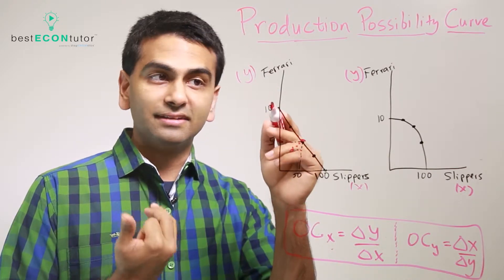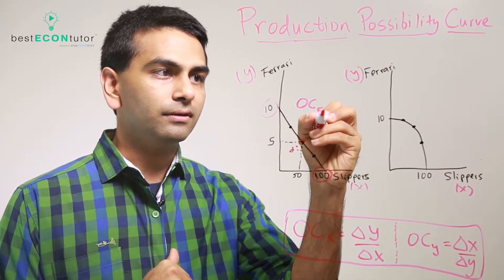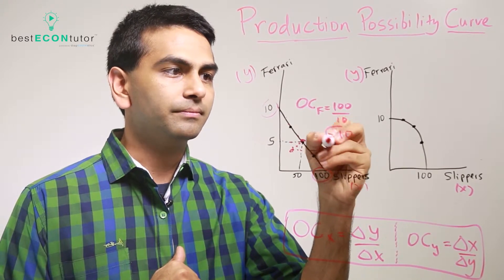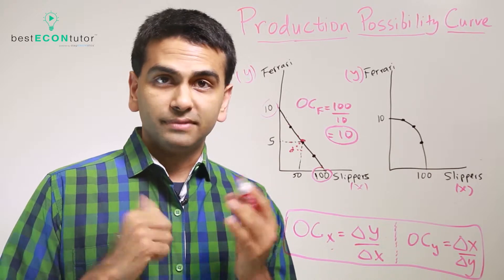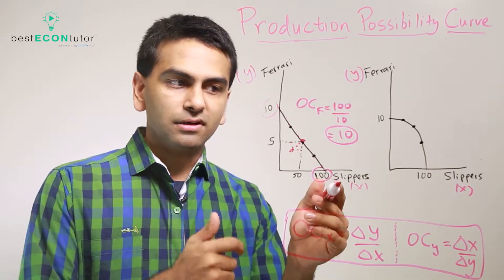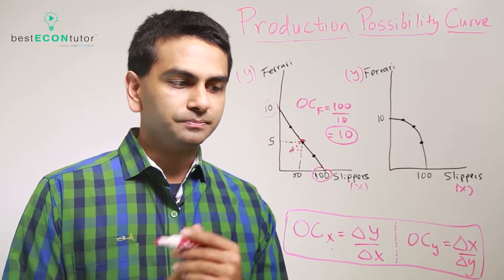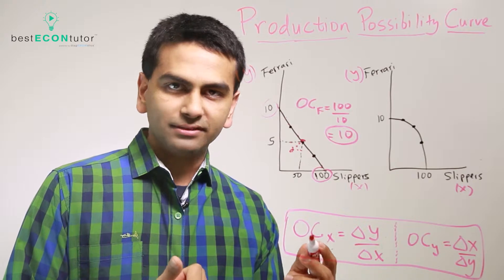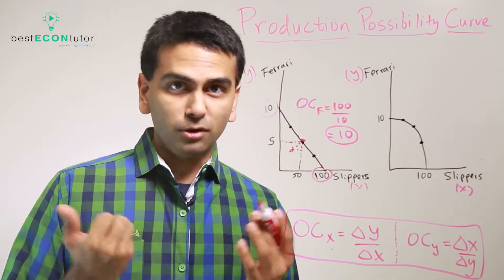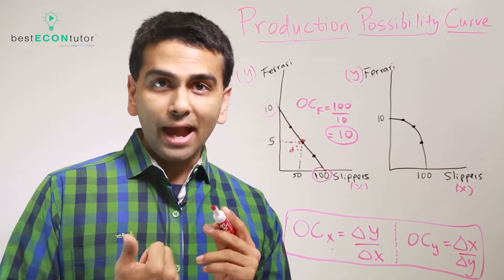The cost of a good is the amount of the other good you're giving up. The cost of good X is the amount of good Y you're giving up divided by the amount of good X. So the opportunity cost of a Ferrari would be 100 slippers over 10 Ferraris, which equals 10 — so the cost of a Ferrari is 10 slippers. Likewise, the cost of a slipper is 10 Ferraris over 100 slippers, which is one-tenth. The cost of good X is simply change in Y over change in X — that's the slope of the PPF line, and the opportunity cost of the y-axis good is the reciprocal of that.